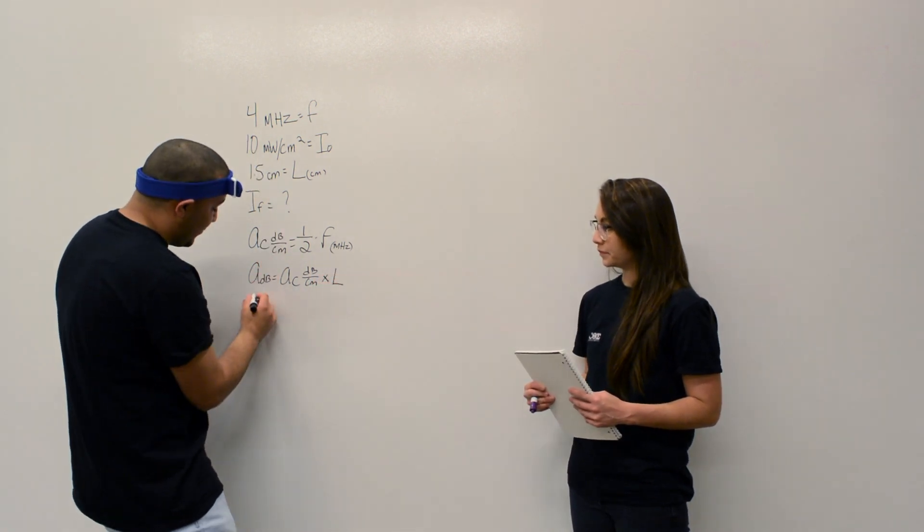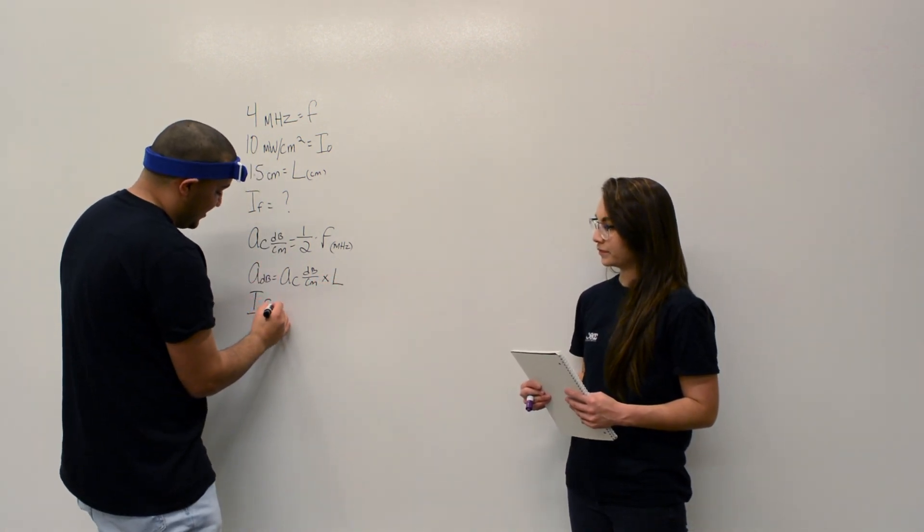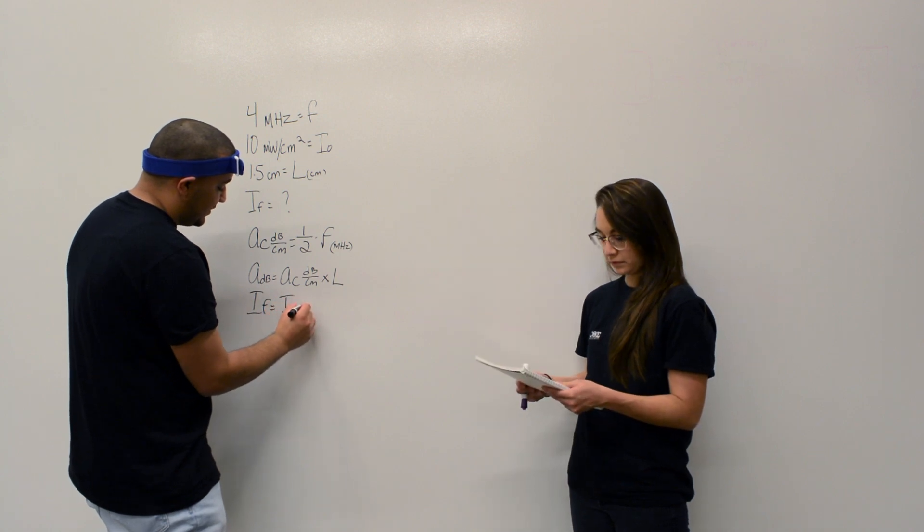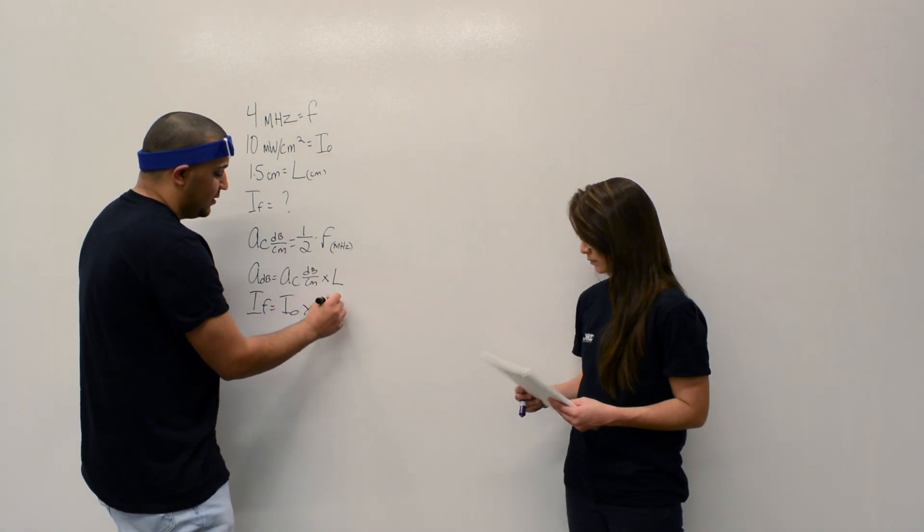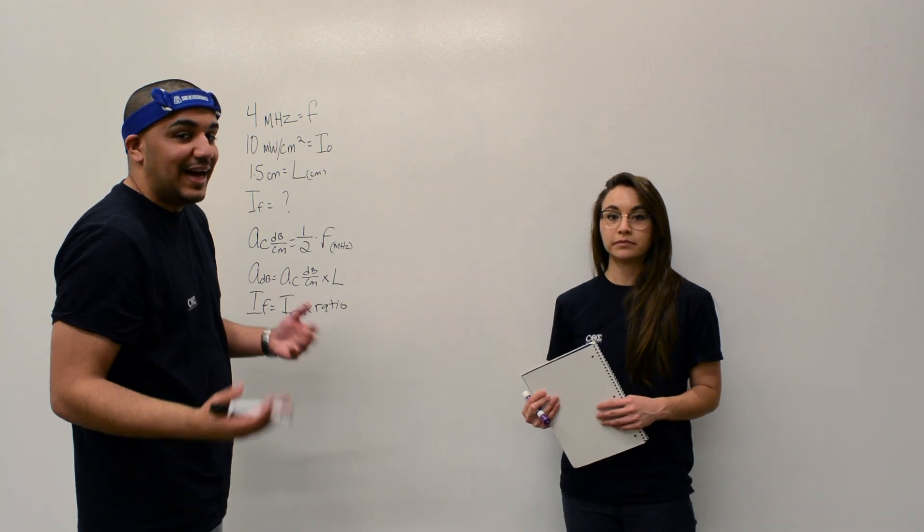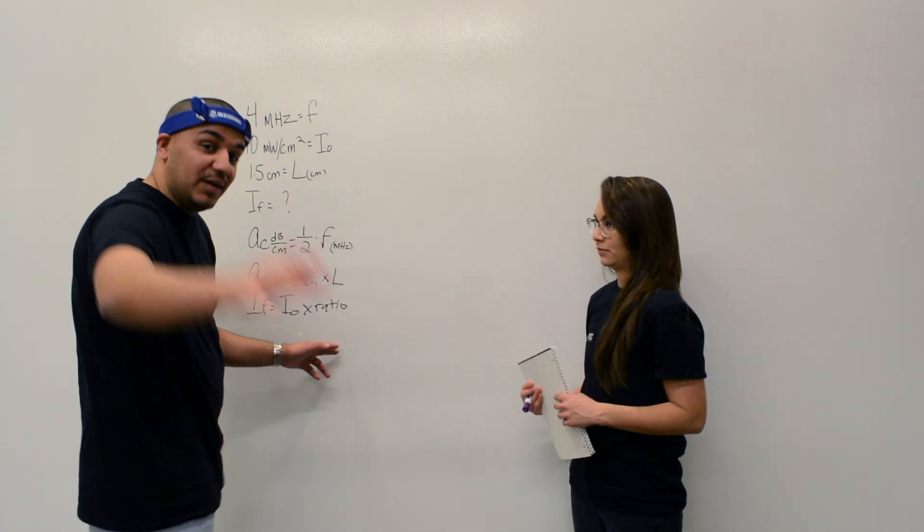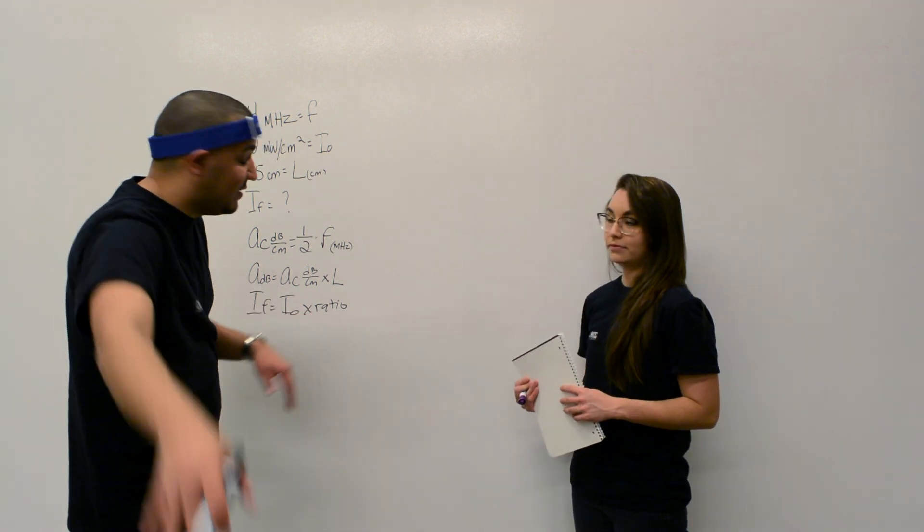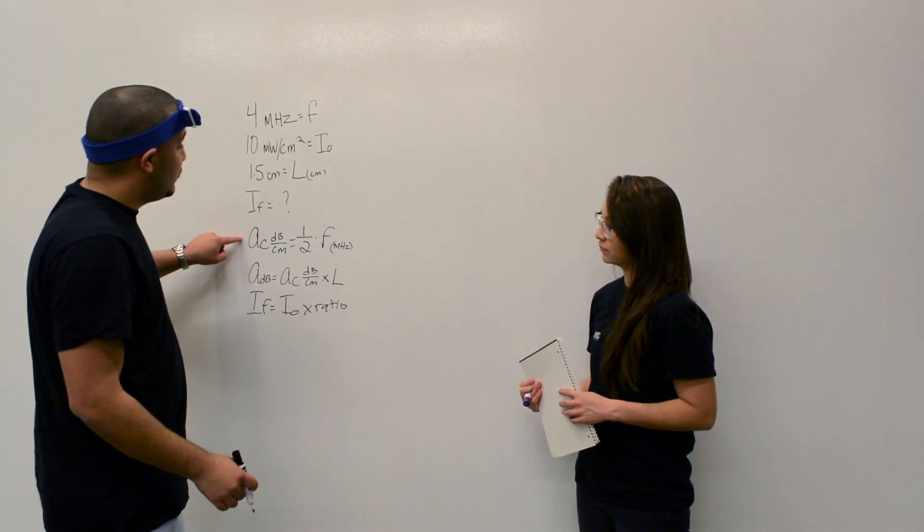And then after that, we're going to solve for the final intensity. Final intensity is your initial intensity times the ratio. Who said anything about ratio? I did. But ratio comes from your attenuation. We'll get to that in a second.